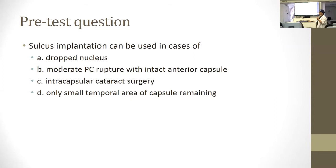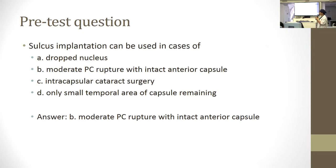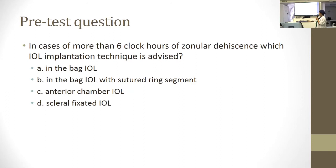Sulcus implantation can be used in which situation? The answer is B — moderate PC rupture with an intact anterior capsule. In cases of more than six clock hours of zonular dehiscence, which IOL implantation technique is advised? The answer is in the bag with a sutured segment.